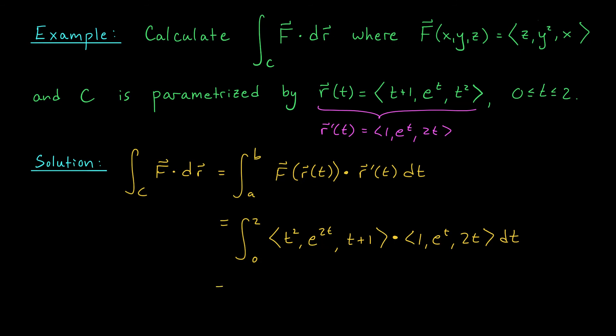If you expand this dot product and simplify everything, you should be left with the integral from 0 to 2 of 3t² + e^(3t) + 2t dt. A nice single variable integral.